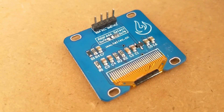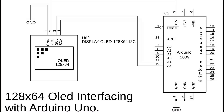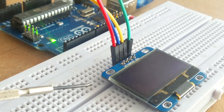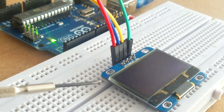Now let's have a look at the circuit diagram. The circuit diagram is very simple. The VCC and Ground pins of the 128x64 OLED display module are connected with the Arduino's 5V and Ground. The SCL and SDA pins of the OLED display are connected with the Arduino's analog pins A5 and A4, which are the I2C pins. If you are using Arduino Mega, connect these pins with pins 20 (SDA) and 21 (SCL).